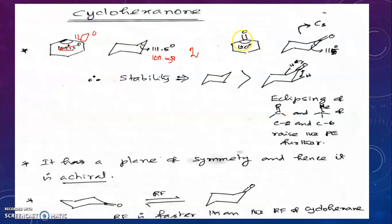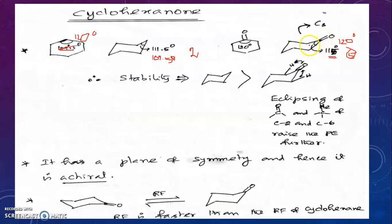In cyclohexanone, the interior bond angle in planar form is 120°. In chair form the experimental bond angle at the carbonyl carbon is 115°. In the carbonyl group, carbon is sp2 and its normal bond angle should be 120°. The difference is 5°. When the difference is larger, angle strain is greater. Therefore the chair form of cyclohexanone has greater angle strain compared to the chair form of cyclohexane.